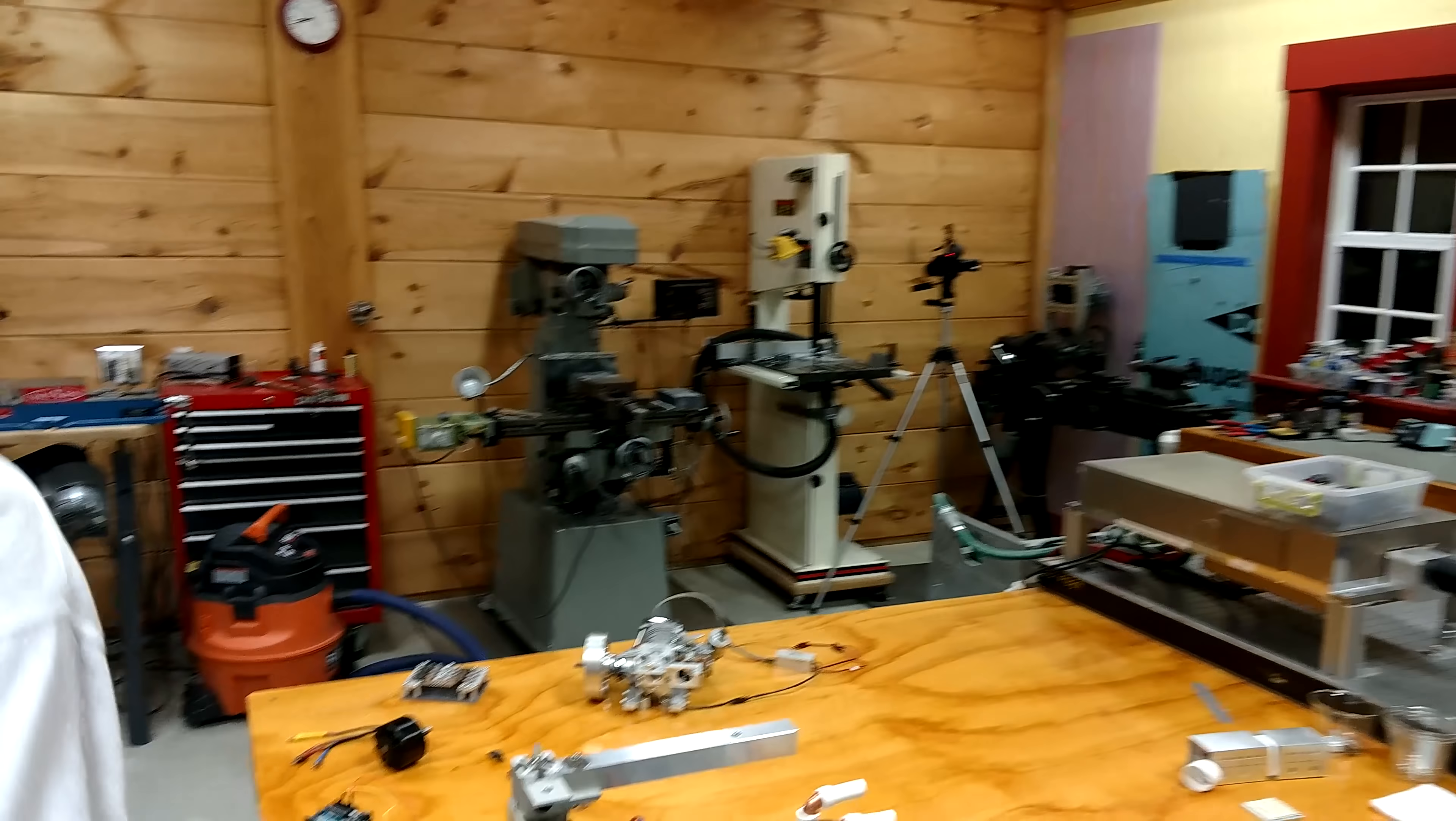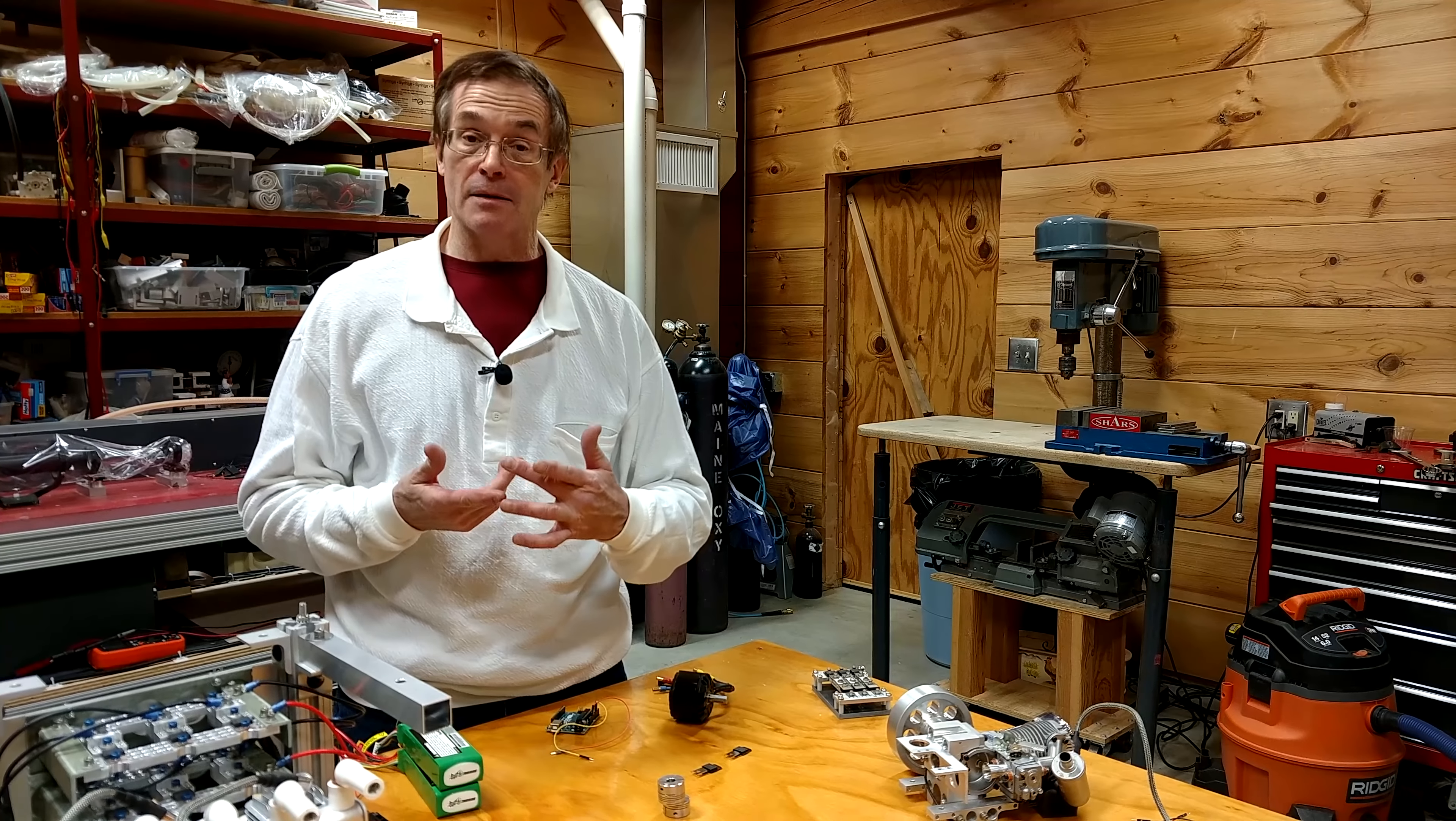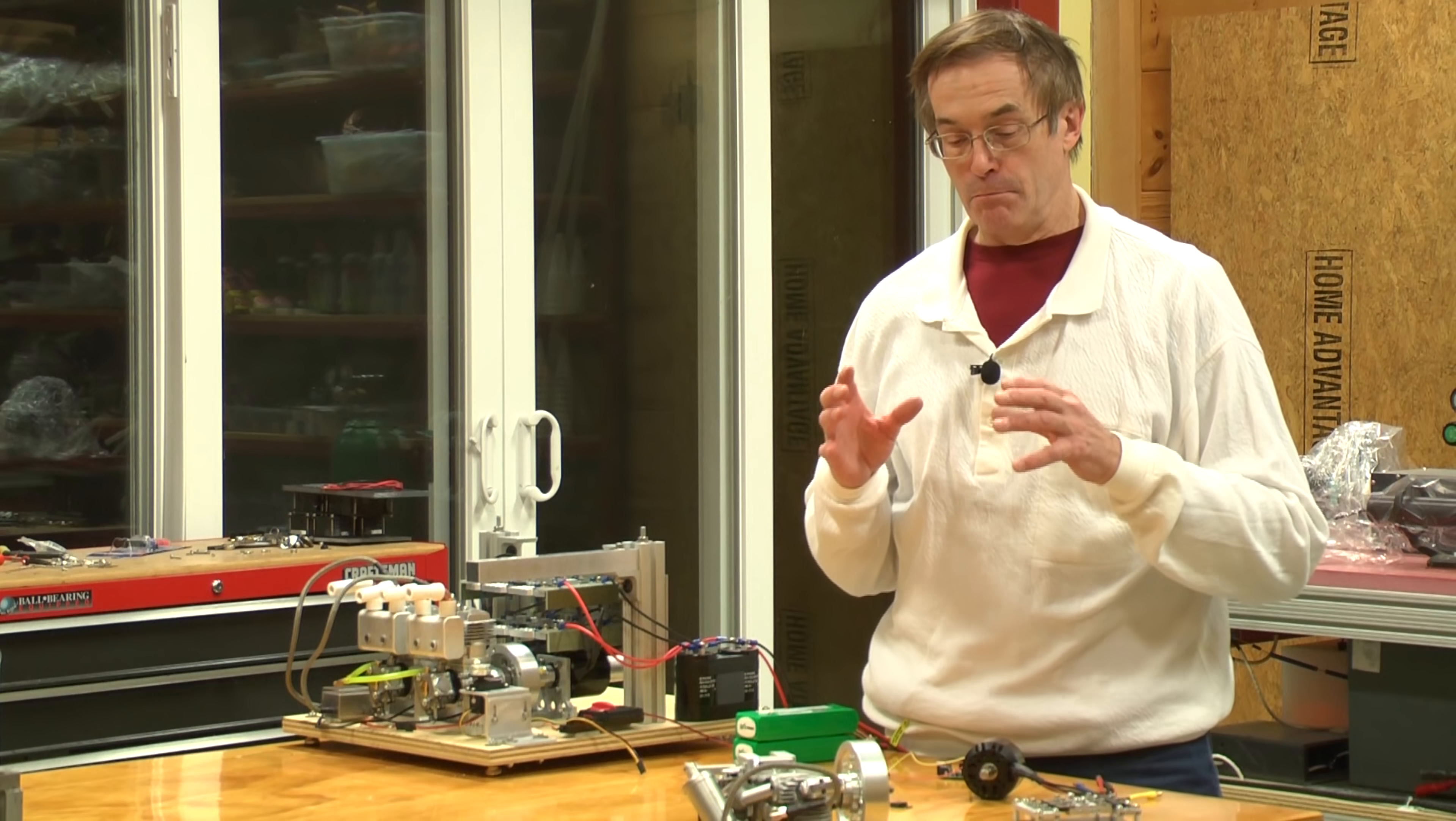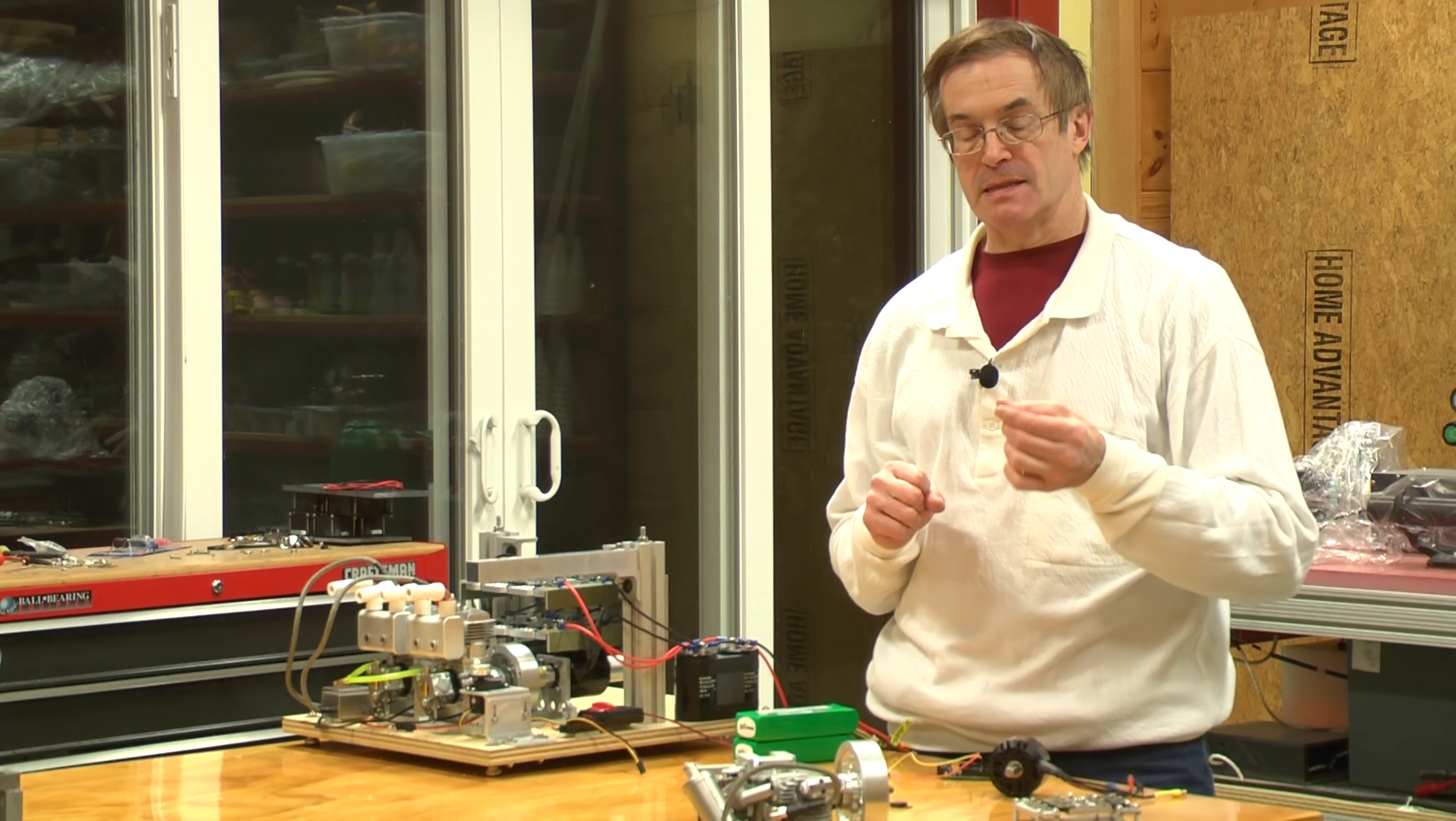The next thing you're going to have to decide is how to generate the power. If you go on YouTube, you'll see that a number of people who built little DC generators almost without exception use automotive alternators as the power generator. They're robust, they're inexpensive, they're easily available, and they're voltage regulated. So despite varying RPMs and varying current loads, they produce a stable voltage.